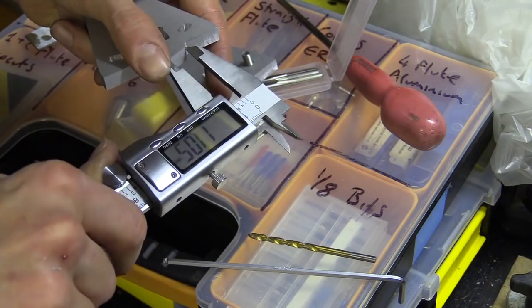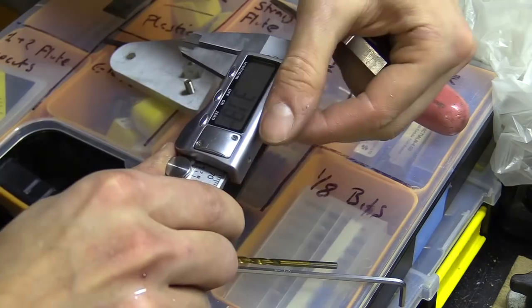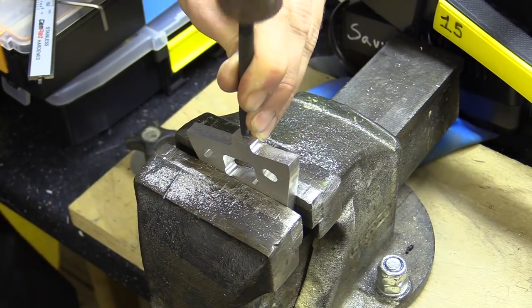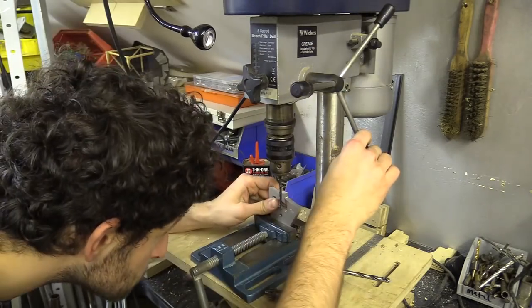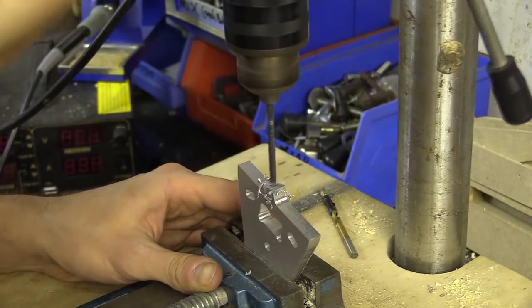I also marked and drilled a hole, which I again tapped for the fine adjustment screw. This is a little off from the CAD model because of the cock up with the cutting, but I can still use it to test the mechanism. I can also adjust the model based on how this works by taking measurements using my vernier caliper.